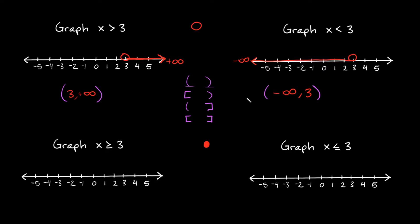One last thing to point out about interval notation: you basically write your answer in the same order that you graphed it. So since the 3 is on the left and the infinity sign is on the right in the first example, I put 3 on the left and infinity on the right. Same thing here — the negative infinity sign is on the left, so I put it on the left, and since my 3 is on the right, I put it on the right.